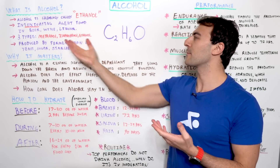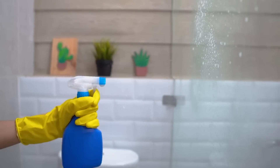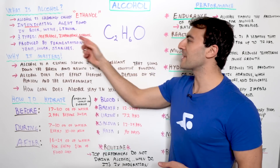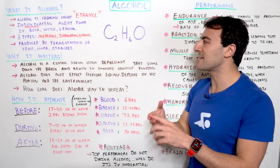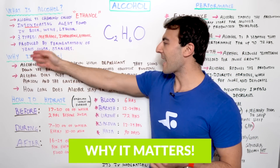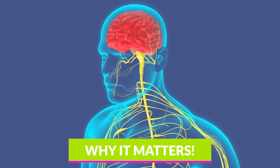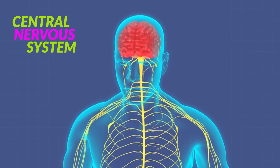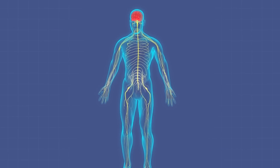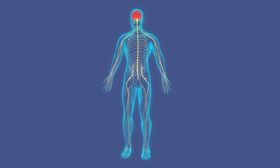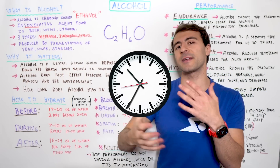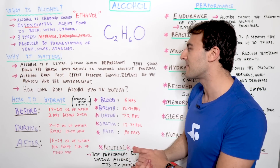You might be familiar with these in disinfectants, pesticides, and as a type of fuel. Alcohol is produced by fermentation of yeast, sugars, and starches. Here's why this matters: alcohol is a central nervous system depressant that slows down the brain and results in impaired cognitive function. In a bit, we're going to talk about how long alcohol can stay in your system and the different impacts it has on your body.